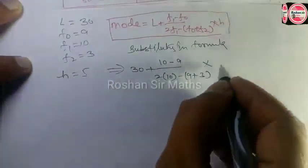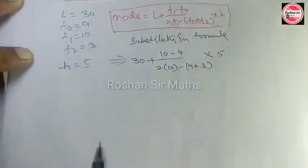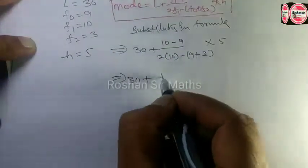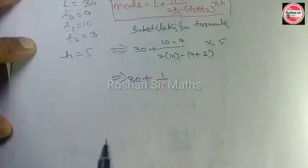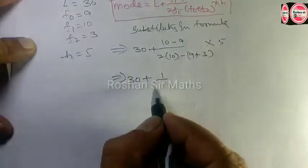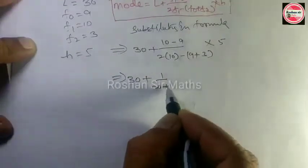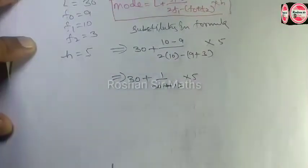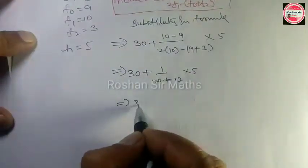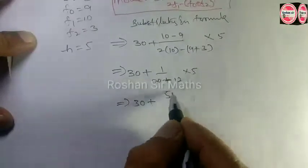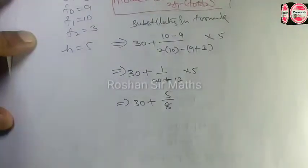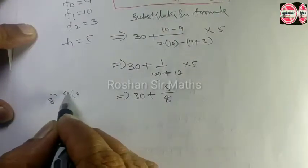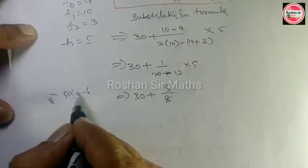अगले step में 30 plus, इन दोनों को minus करेंगे, 1 हो जाएगा। नीचे: इन दोनों को minus करेंगे - 8 हो जाएगा। अब 5 को 8 से divide कीजिए - 0.625 आएगा। तो Mode = 30.625.